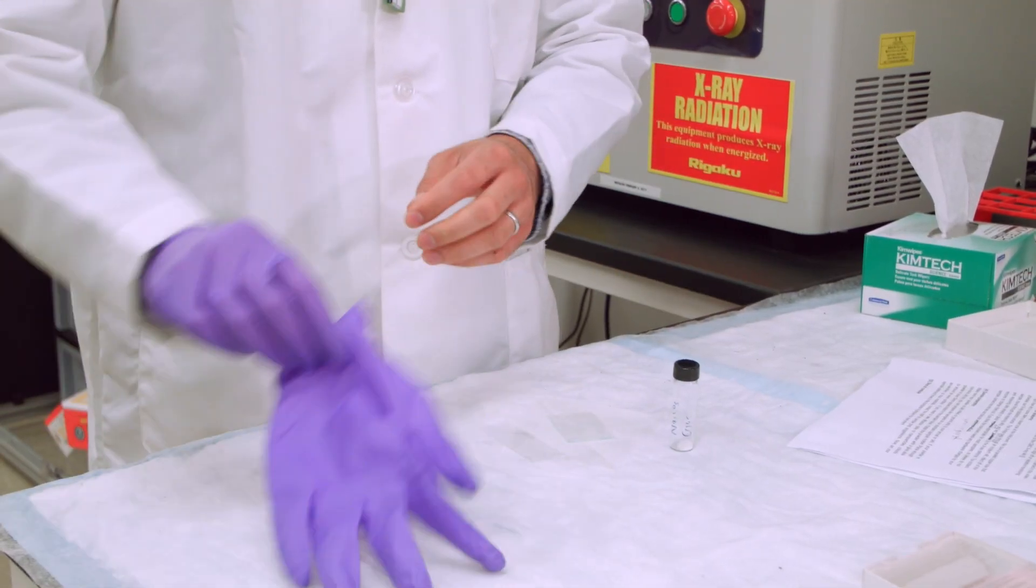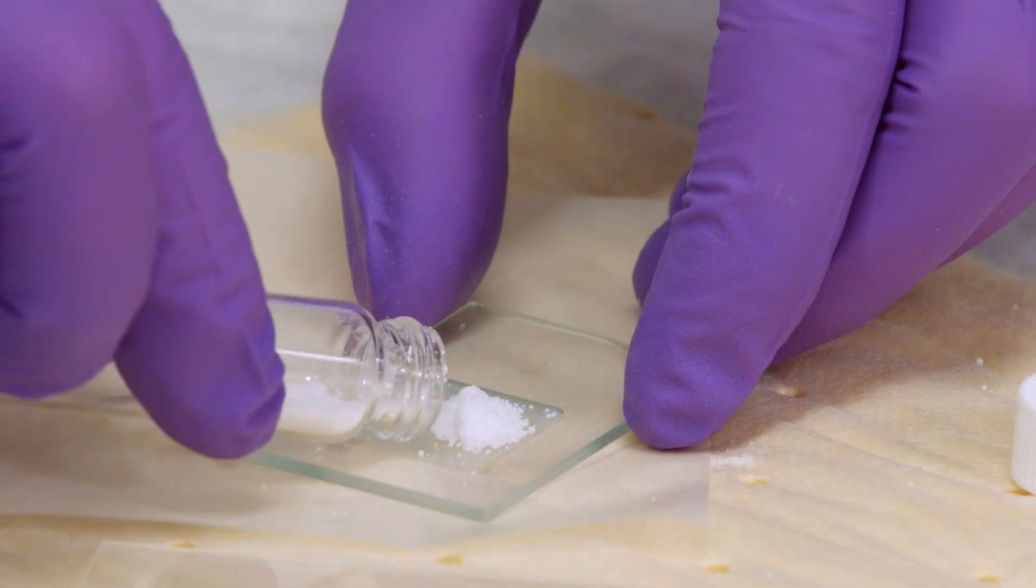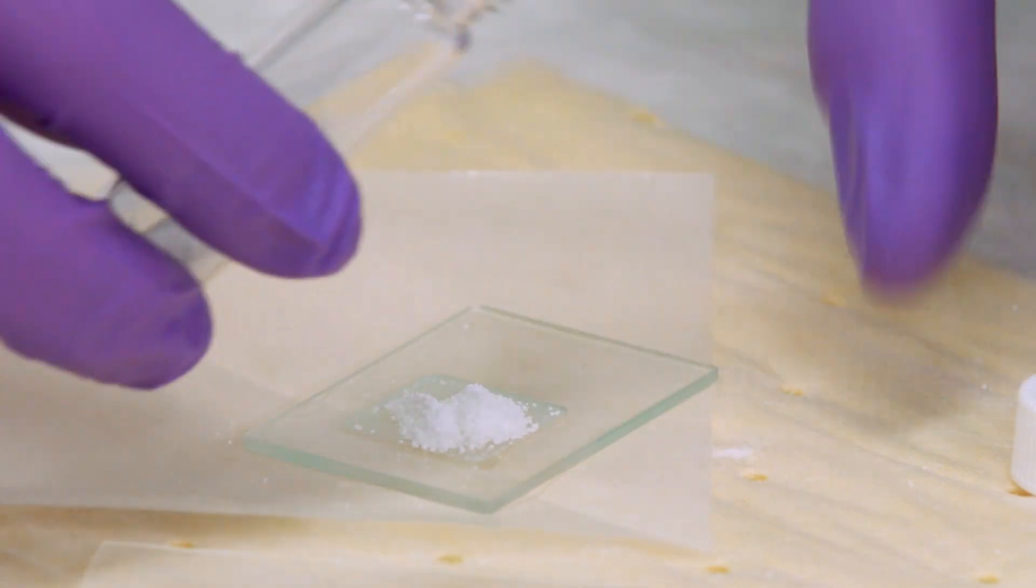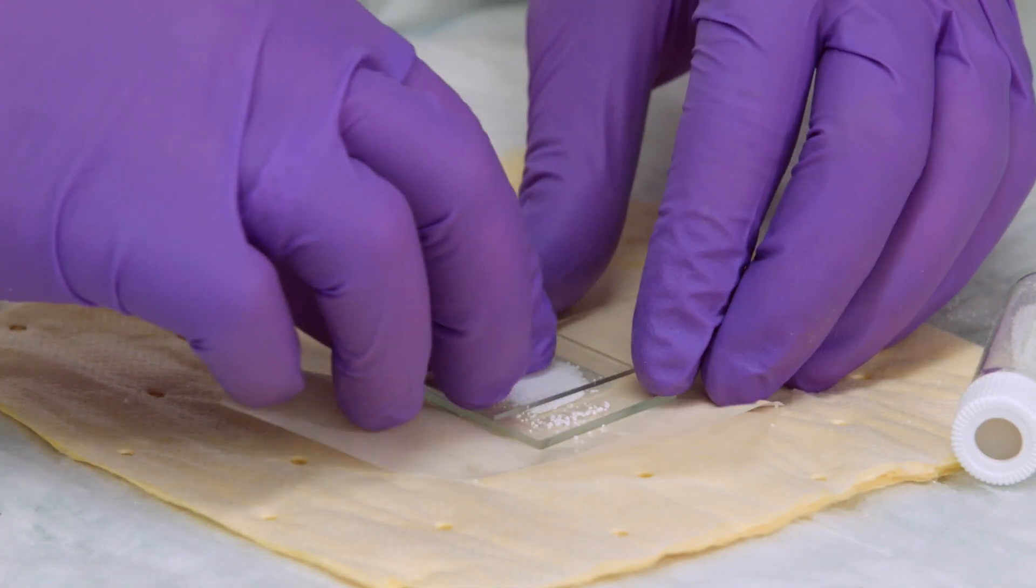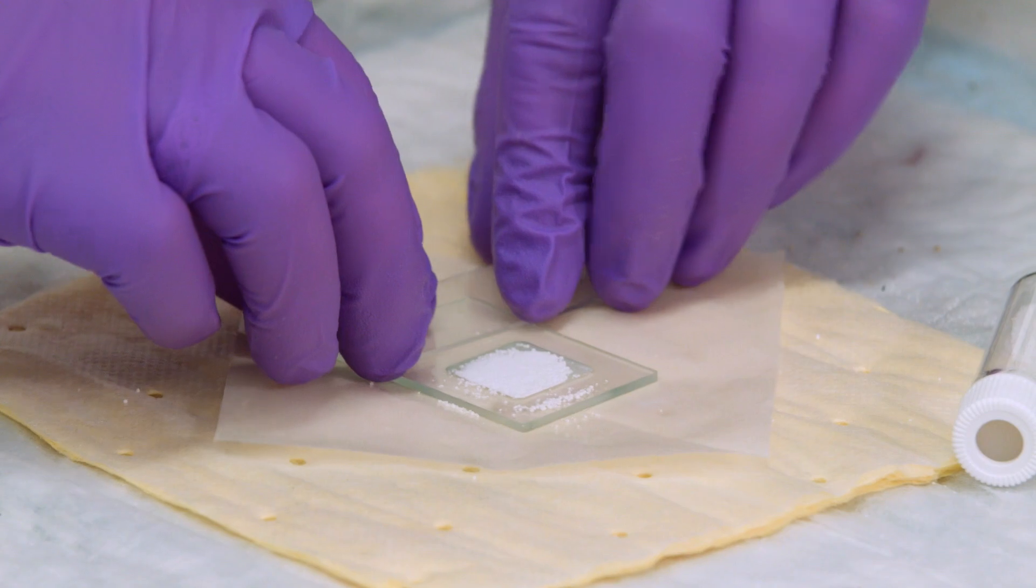Make sure your powder is ball milled or ground before you come to the x-ray lab. If your sample is non-toxic and dry, you can use our standard sample holder. Make sure you have enough sample to cover the 15 millimeter square area. Flatten the sample with a glass slide so you have an even surface for diffraction.